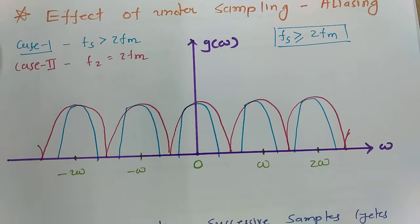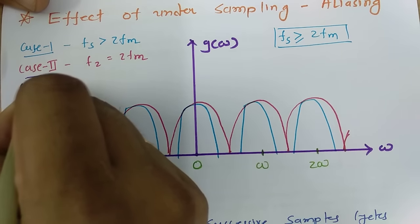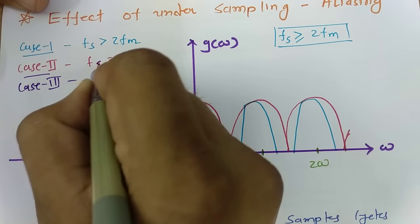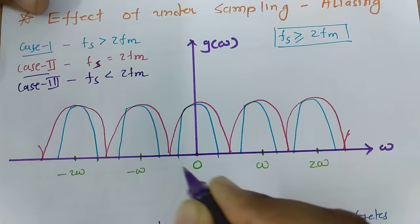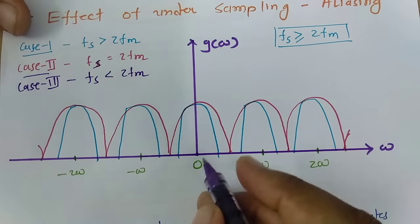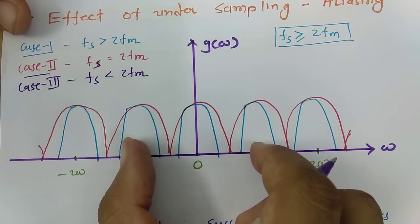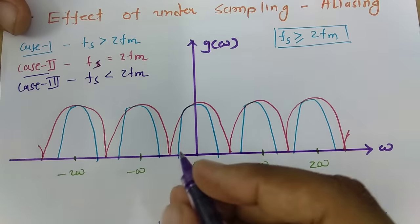Now for Case 3, this is undersampling — what if fs is less than 2fm? Here, as the frequency fm increases, consecutive samples will overlap each other.